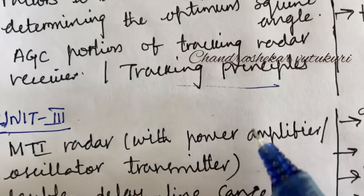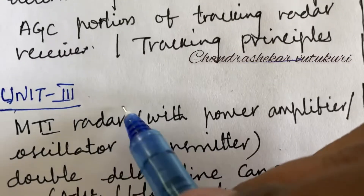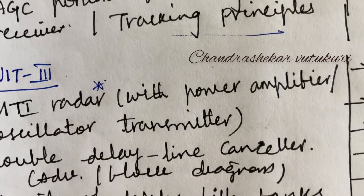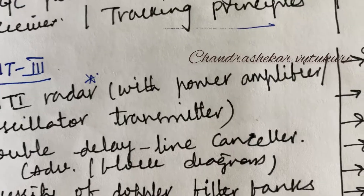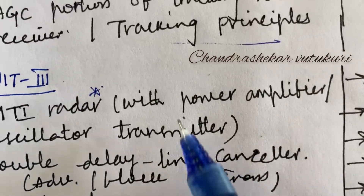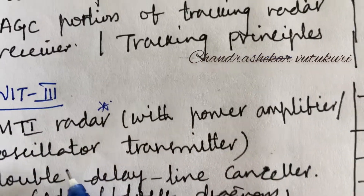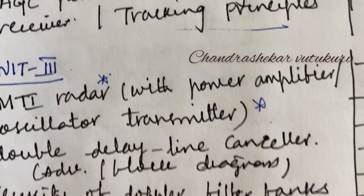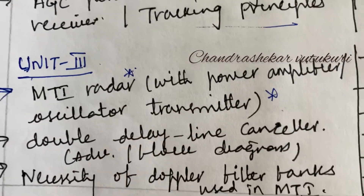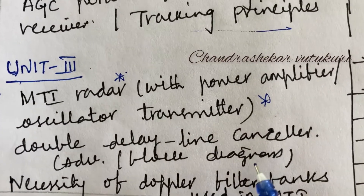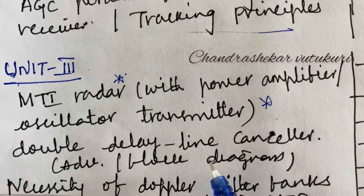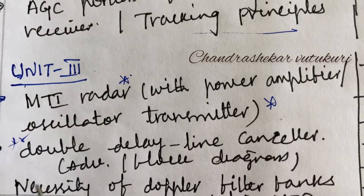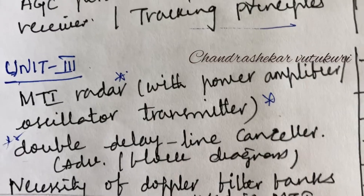Unit 3 is a very important question. The gunshot question I give is related to MTI radar — you are not supposed to skip any part. Work out with power amplifier and oscillator transmitter related to MTI radar along with the neat sketch. This concept and the double delay line canceller, their advantages and the block diagram related to double delay, are important — you are going to get one question on this.